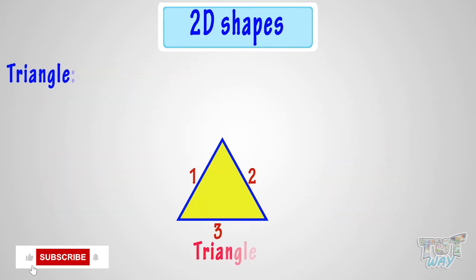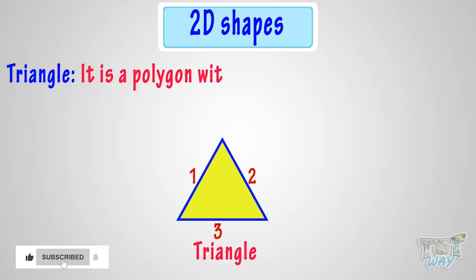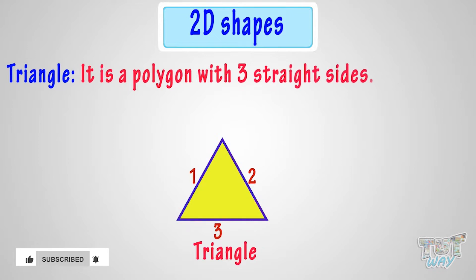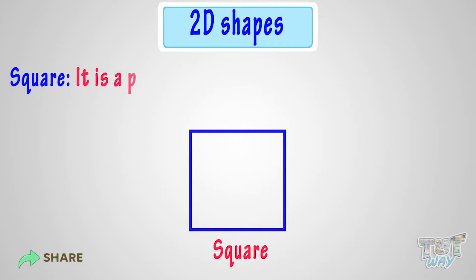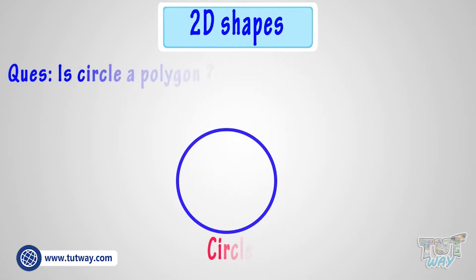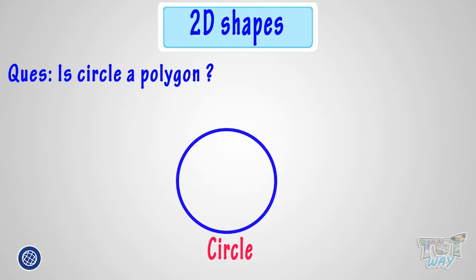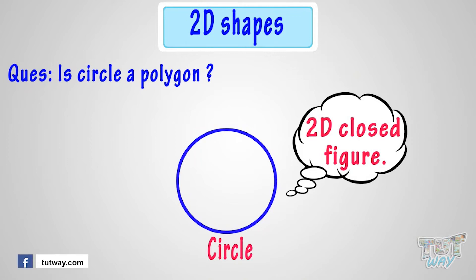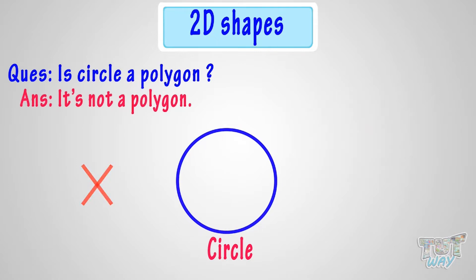A triangle is a polygon with three straight sides. A square is a polygon with four straight sides. Now, is a circle a polygon? A circle is a 2D closed figure, but it is not made up of straight lines, so it's not a polygon.